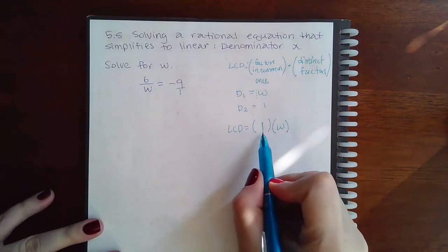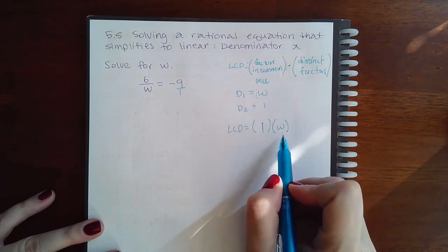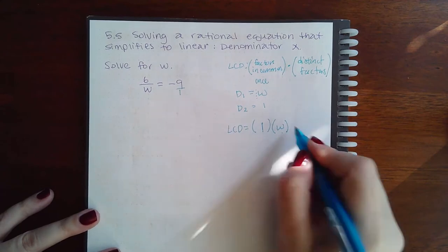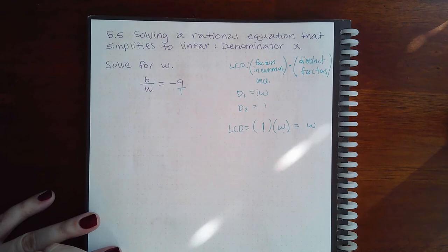So this is what they have in common, and then this is what the first denominator has different from the second denominator. So if I multiply that together, that's actually just w. So my lowest common denominator is w.